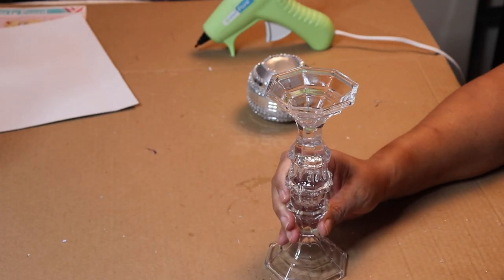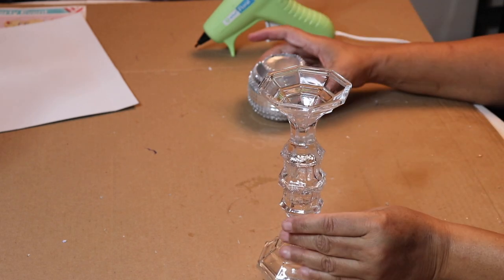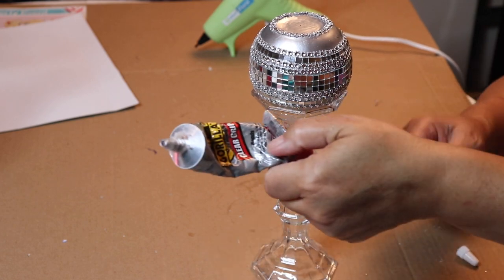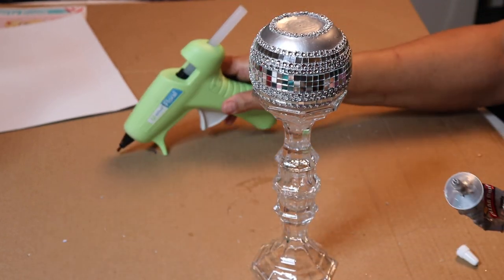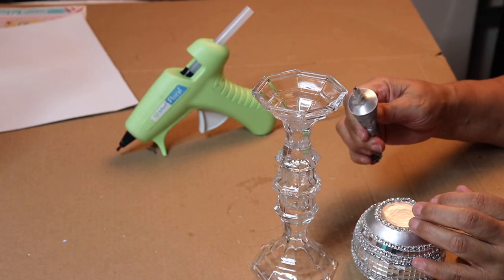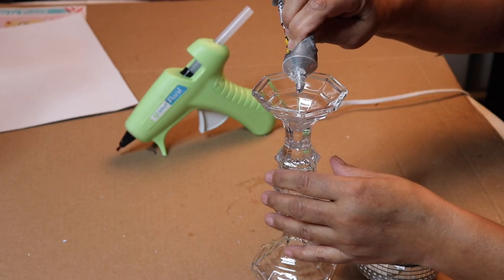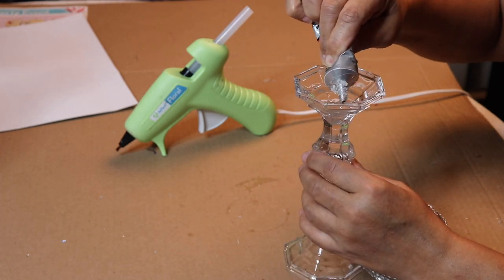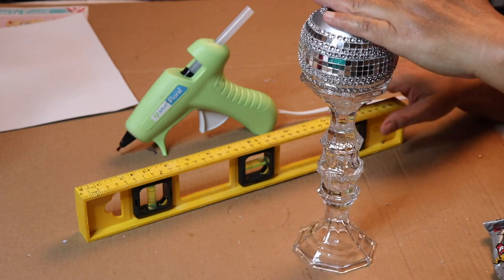Once I was done decorating the smaller bowl, I glued it to the base using Gorilla Glue along with the hot glue. Spread the glue just inside the rim of the candle holder. Once you're done, add the bowl and then make sure it's level.